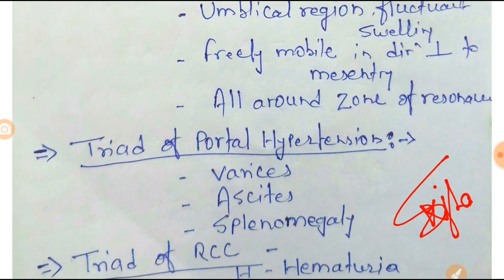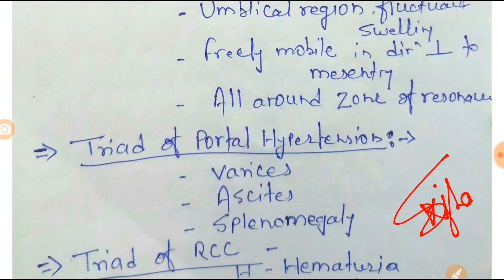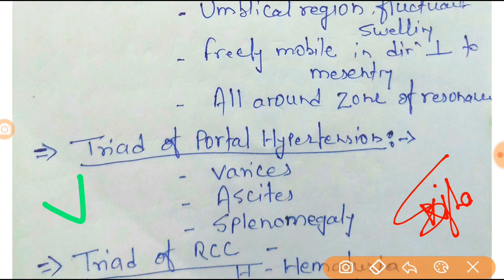Next one is the Triad of portal hypertension. In portal hypertension, the triad is varices or variceal bleeding, ascites, and splenomegaly. The trick is VAS — Varices, Ascites, Splenomegaly — so you can easily remember portal hypertension.